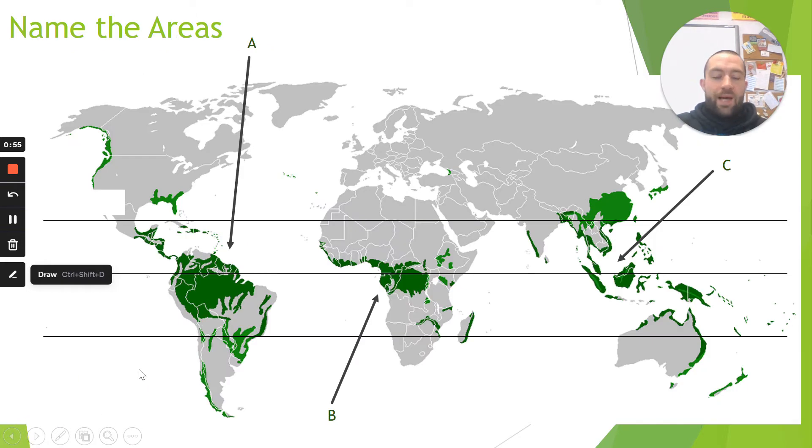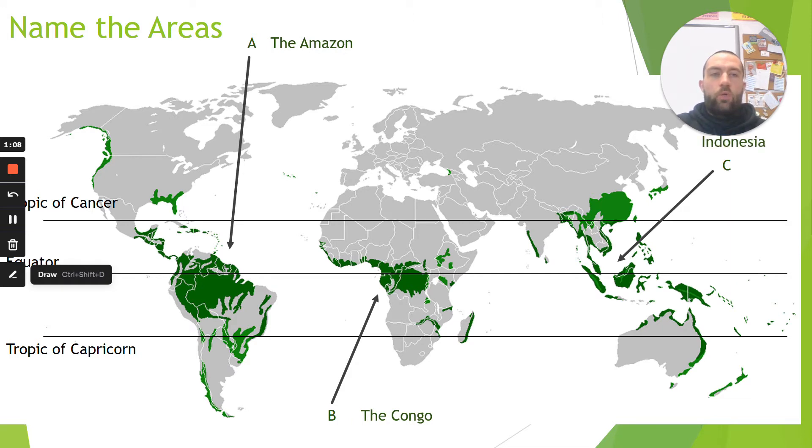So quick recap of the areas again. A is the Amazon, B is the Congo, and C is Indonesia. So we should have marked that on our maps from last lesson.